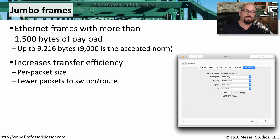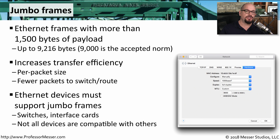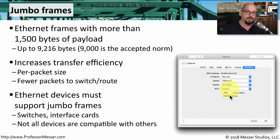This is going to increase the efficiency of the traffic we're sending through the network. Not only is the data within the packets larger, we don't have to make as many switching or routing decisions because we're sending fewer packets through the network. One catch is that all of the devices on your network between you and the storage area device have to support these jumbo frames. There's usually a configuration option within your switch, and there's usually a configuration you would set in your operating system to turn on the ability to send and receive jumbo frames.